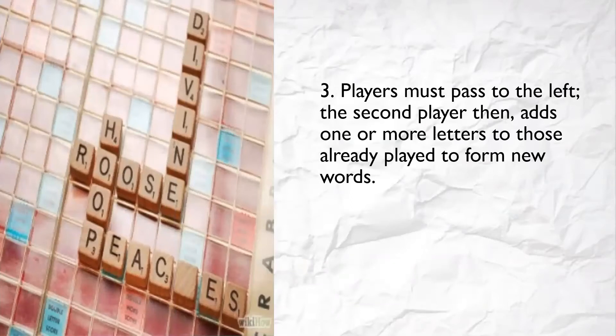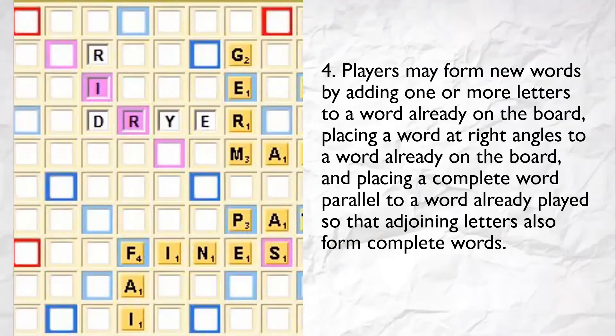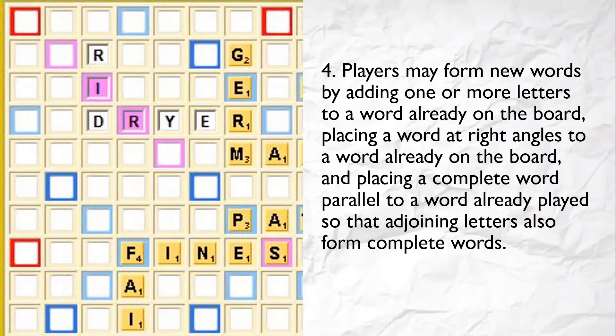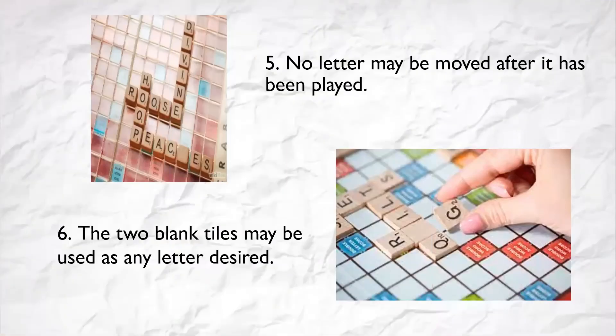Rule 3: The second player then adds one or more letters to those already played to form new words. Rule 4: Players may form new words by adding one or more letters to a word already on the board, placing a word at right angles to a word already on the board, and placing a complete word parallel to a word already on the board, so that adjoining letters also form complete words. Rule 5: No letter may be moved after it has been played.